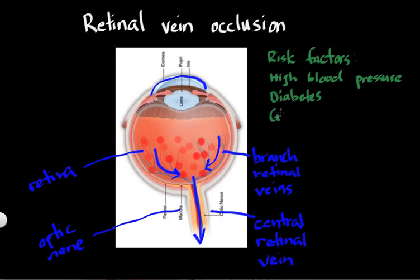Another risk factor is related to the eye itself: glaucoma. Patients who have glaucoma, which is a disease of the optic nerve — the cable that exits the back of the eye in which the retinal vein actually resides — are also at risk for a retinal vein occlusion. There are some other risk factors as well, like smoking, high cholesterol, and sleep apnea, which is emerging as a possible risk factor. If you're interested in lowering your risk, you want to try to limit those risk factors: control your blood pressure, control diabetes, and if you have glaucoma, get treated for that.